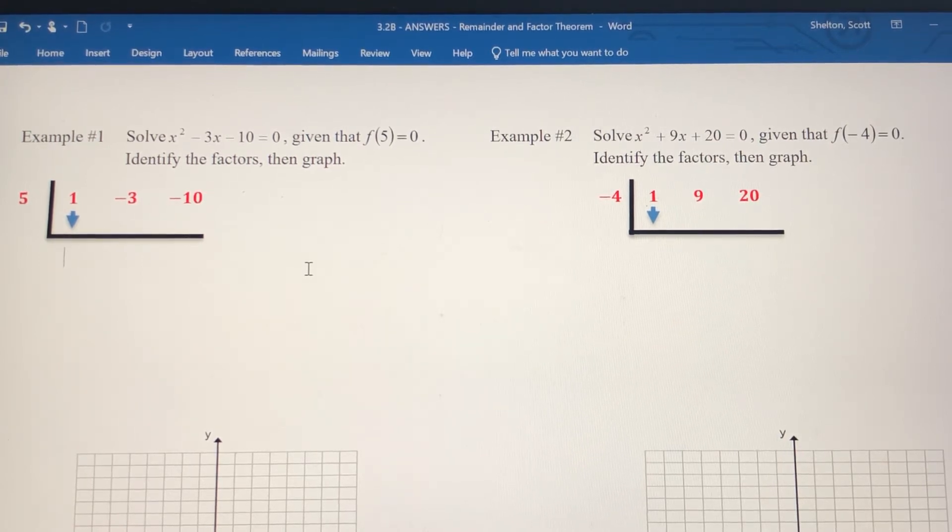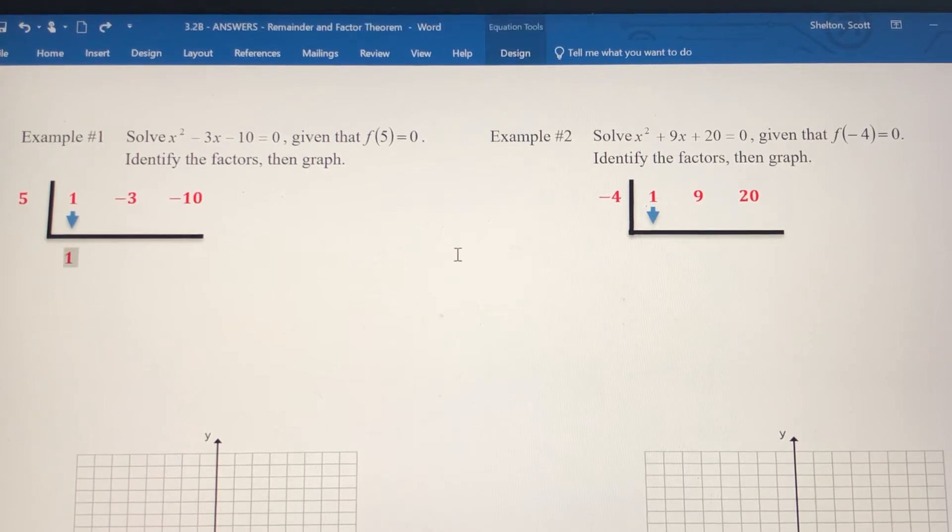Let's go through the synthetic division process. We're going to bring down the 1, multiply 5 times 1, add negative 3 and 5, then multiply 5 times 2. That shows you that f of 5 truly does equal 0, because we've got a remainder here of zero.